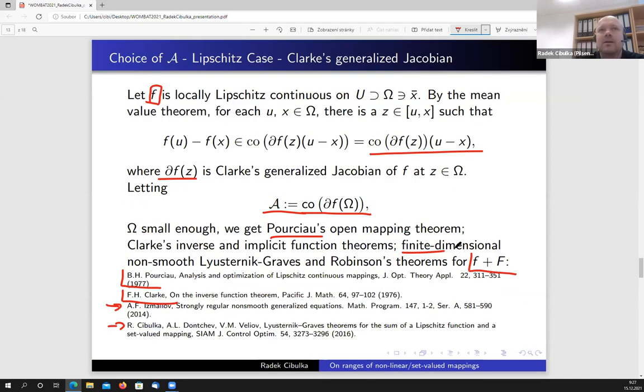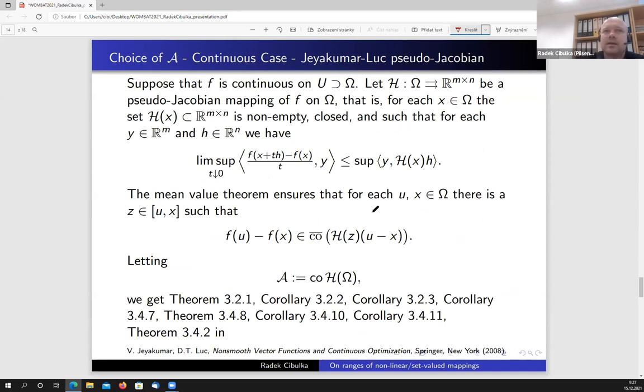So this is the Lipschitz case. If you are in the continuous case, so your function is only continuous, then your choice should be the pseudo-Jacobian from this book. And again, you have mean value theorem, and application of the general results gives you almost every regularity statement in the book by Jeyakumar and Luc. And in our setting is only one, and we have consequences. In the book Non-Smooth Vector Functions, almost every from these results have a slightly different proof. So our framework unifies everything in one.